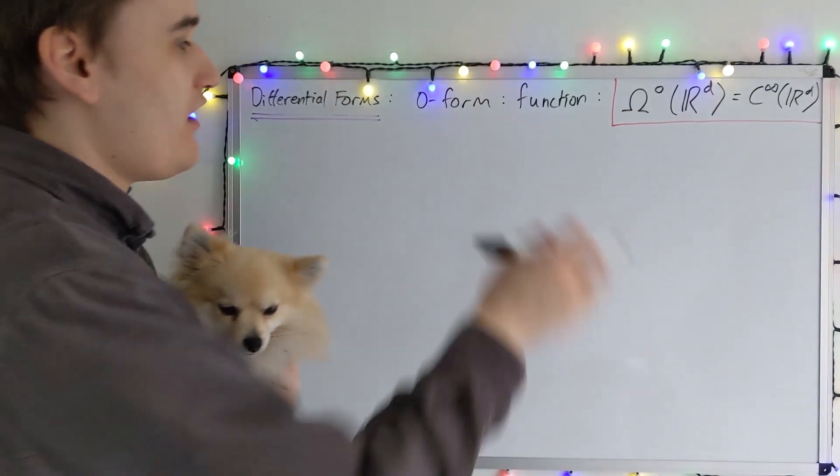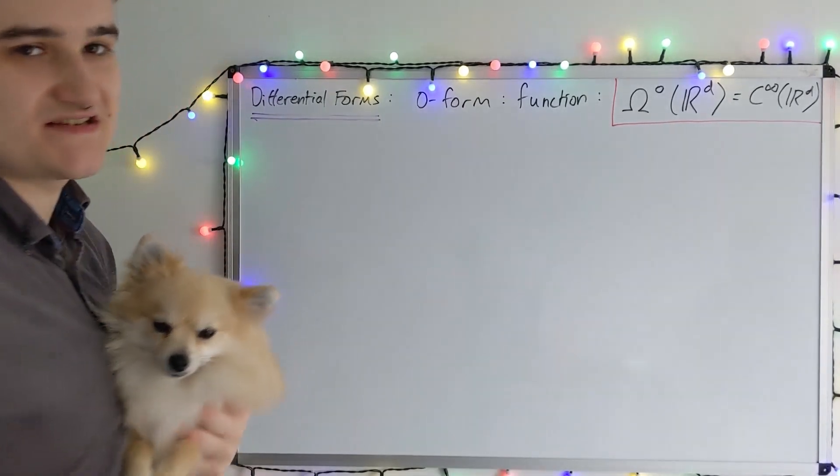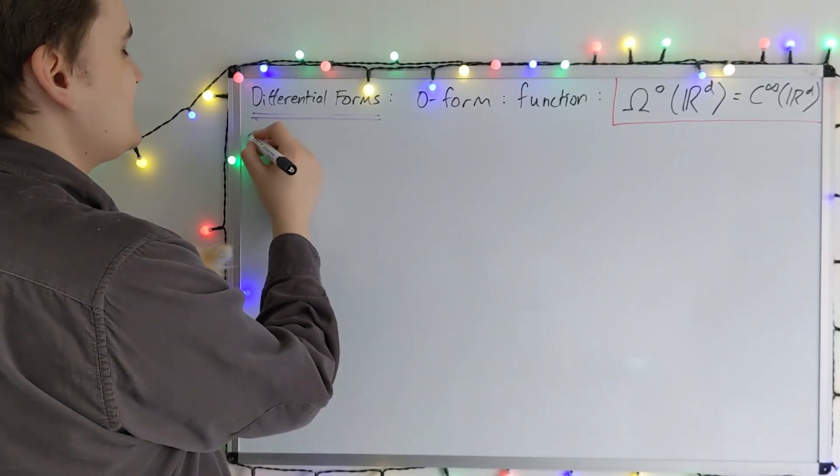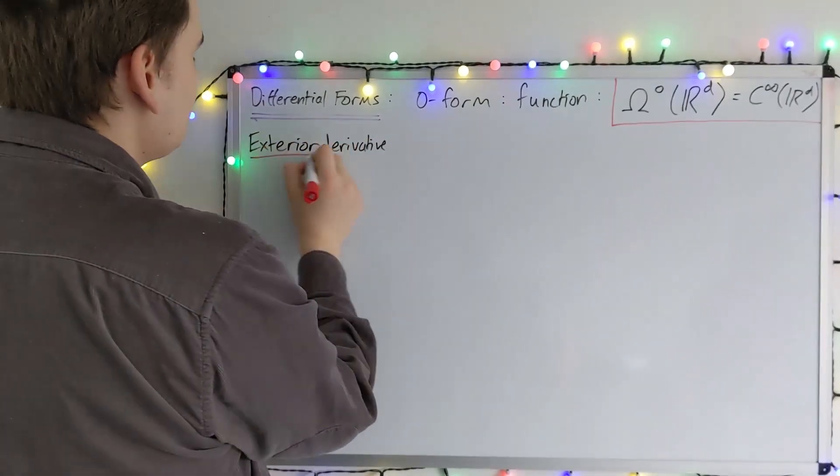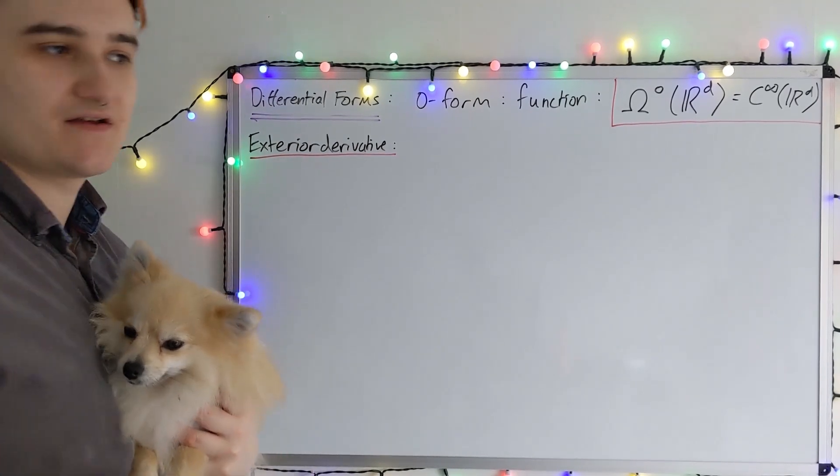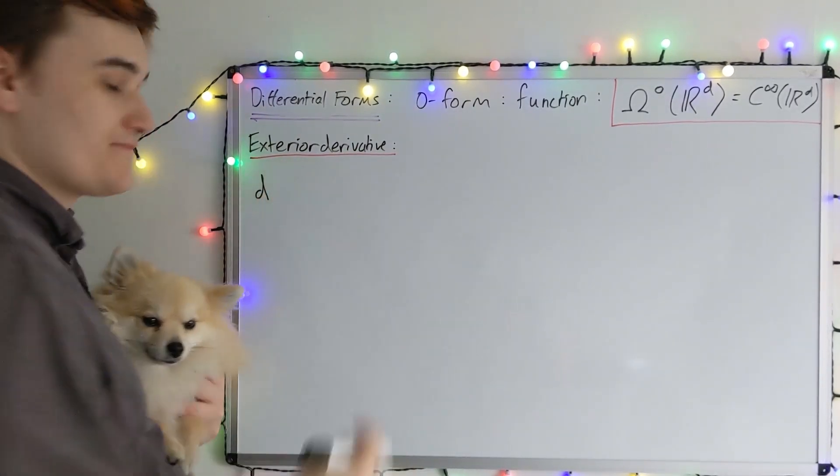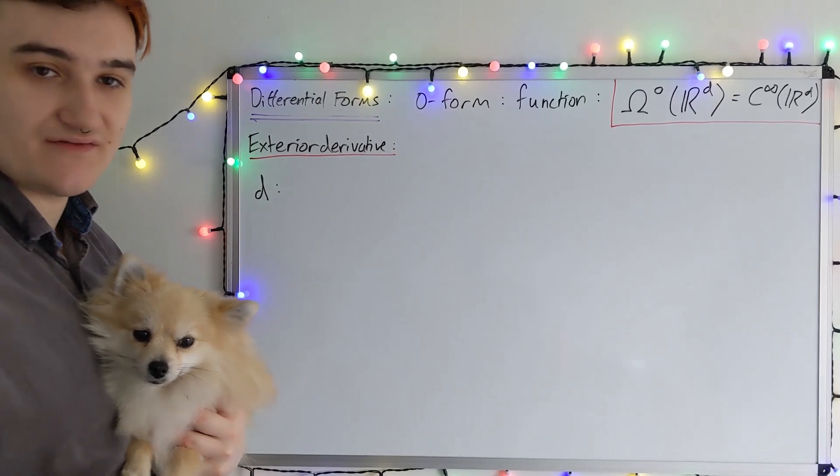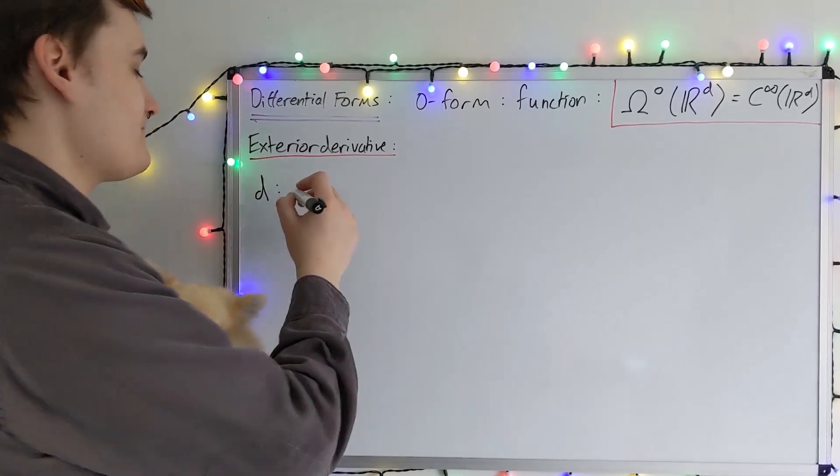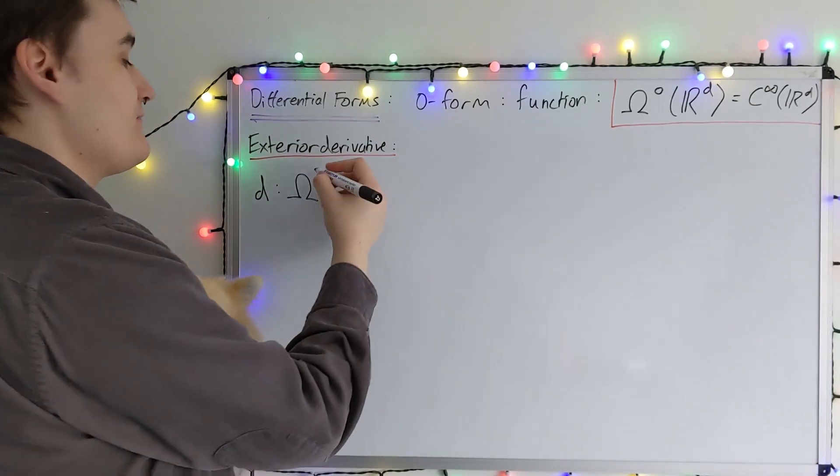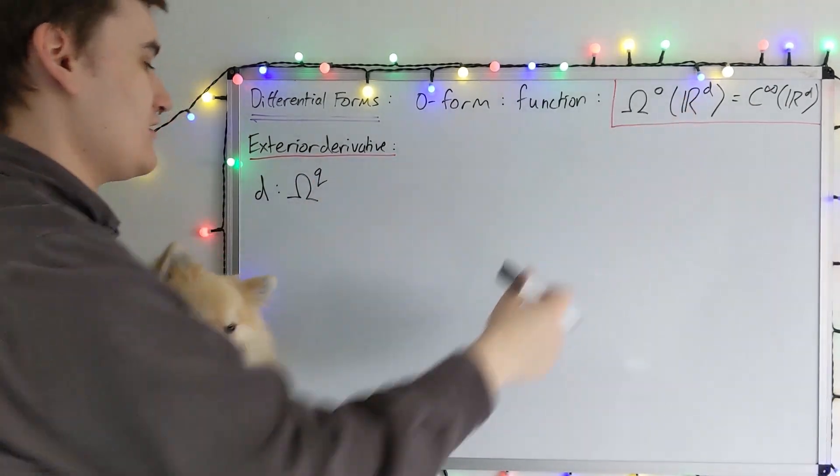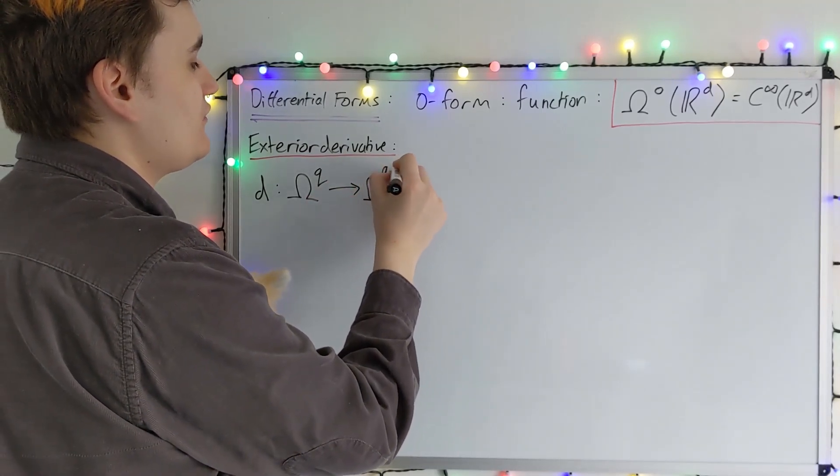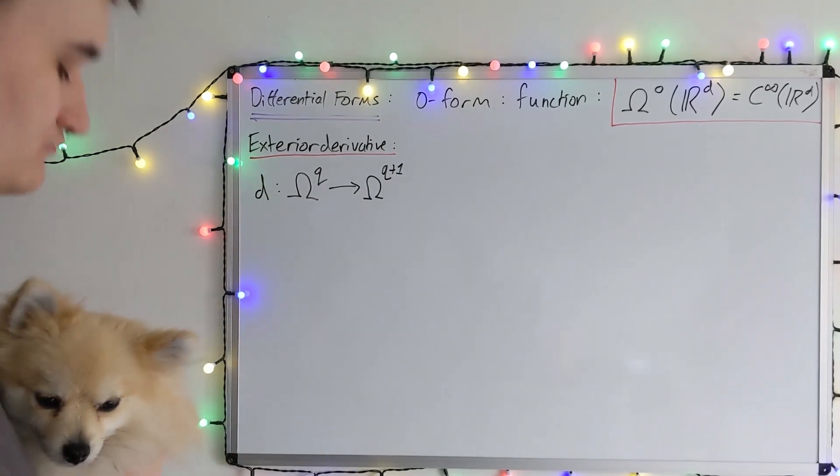So now to go about constructing higher degree forms, so one and two forms, etc. I'm going to need to introduce a new piece of machinery known as the exterior derivative. Okay, so the exterior derivative, I'll just now define, is going to be a map given the symbol D. And it is going to be like a derivative, as we'll see shortly. But for now, we're just going to define it as a map that maps you from the space of q forms over R^d, which I won't bother to write, into q plus one forms.